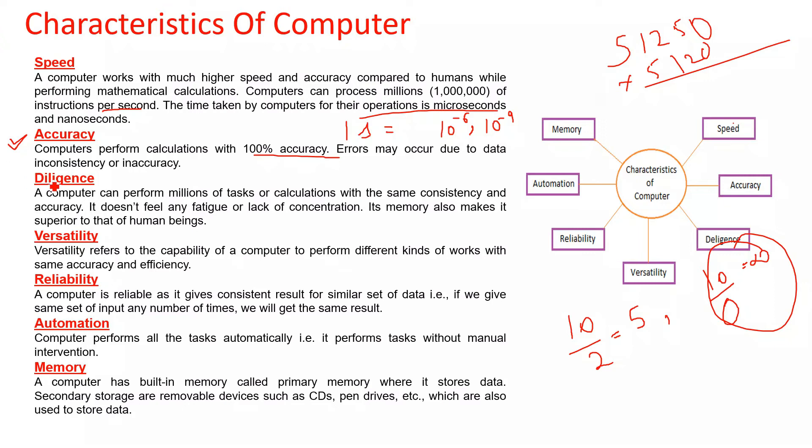Third is diligence. A computer can perform millions of tasks or calculations with the same consistency and accuracy. It doesn't feel any fatigue or lack of concentration. For example, a human being doing calculations for two hours will get tired and productivity will decrease, but the computer will not be tired. Its memory also makes it superior to that of human beings.